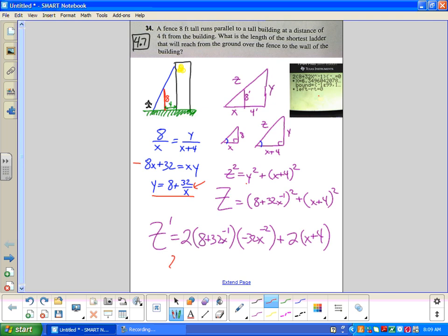So I get that when I set Z prime equal to zero, then x is equal to 6.3496... I suppose the units here would be feet. Do you guys all agree?